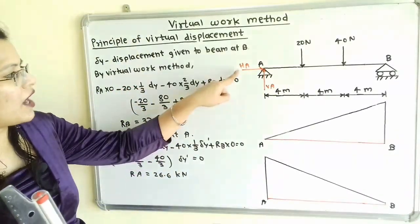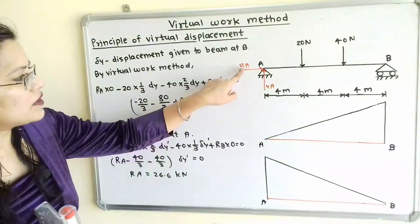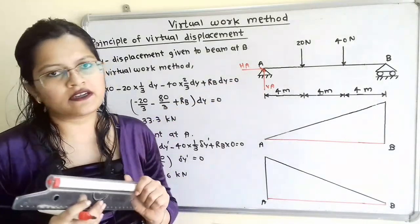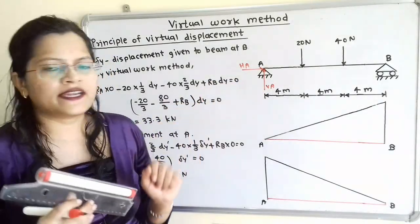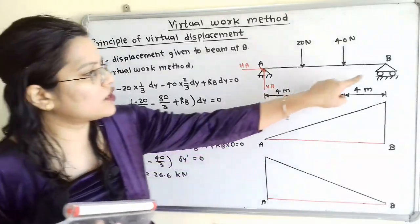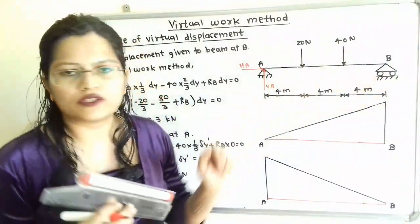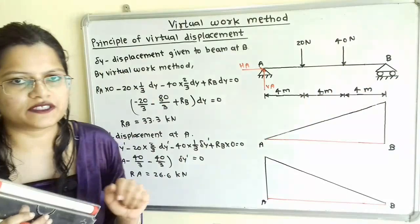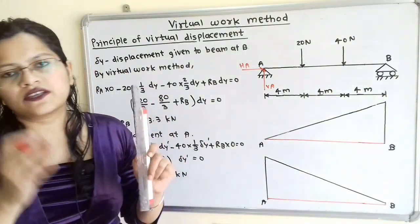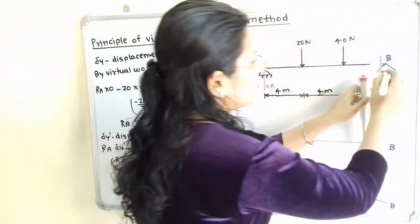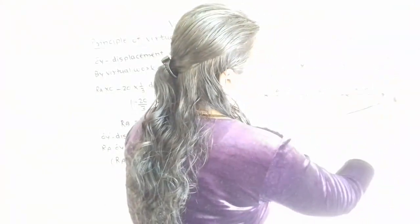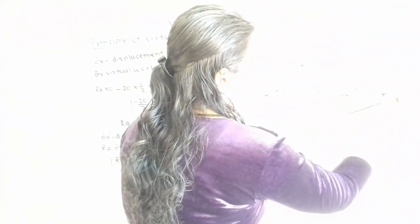We have to find out the horizontal component as well as the vertical component. At end B, a roller support is given, and this roller is placed on the horizontal surface. So at end B, the reaction acts in the vertical direction. We will show this reaction as RB, and its direction is vertical.